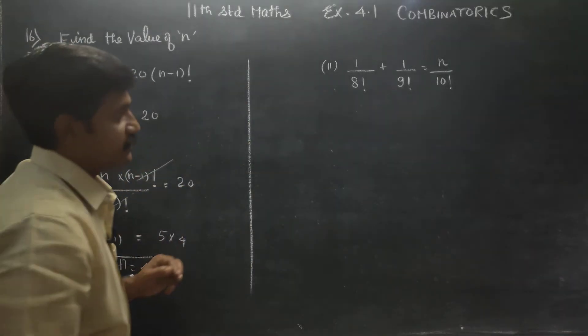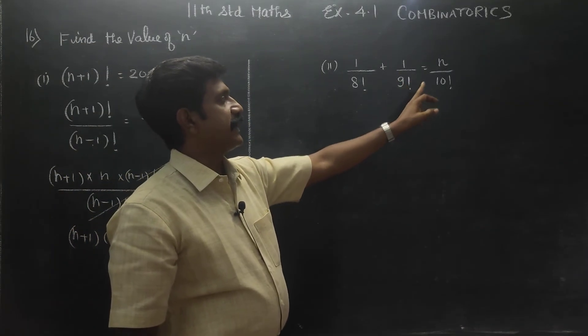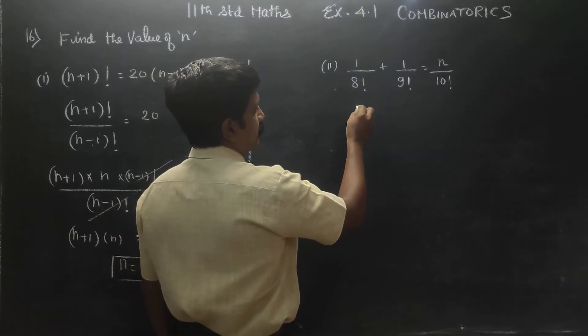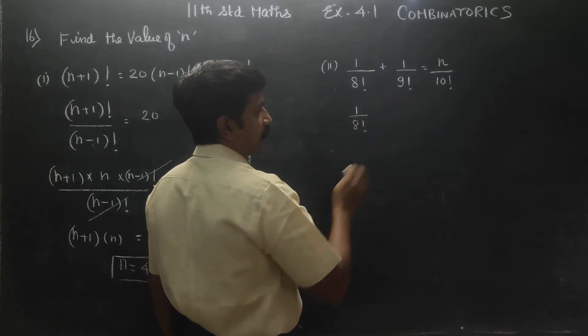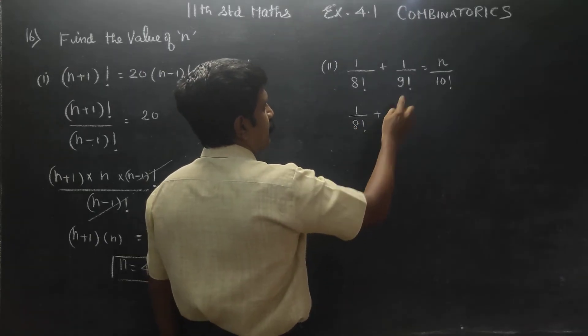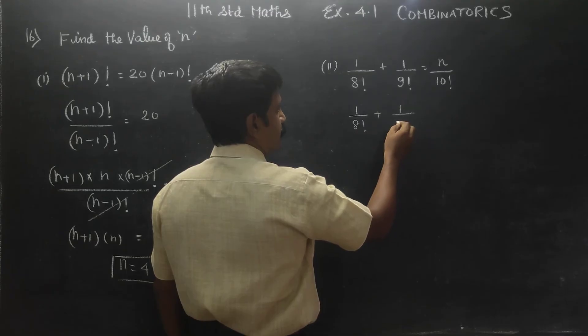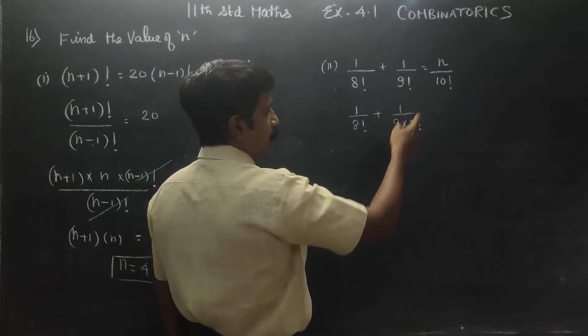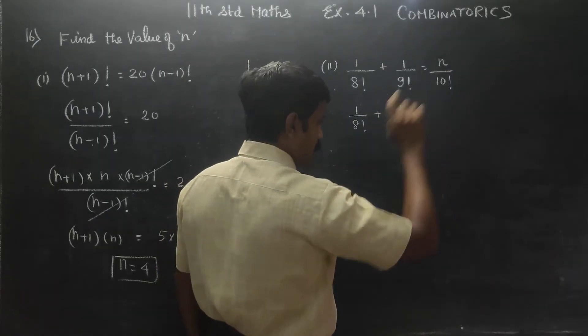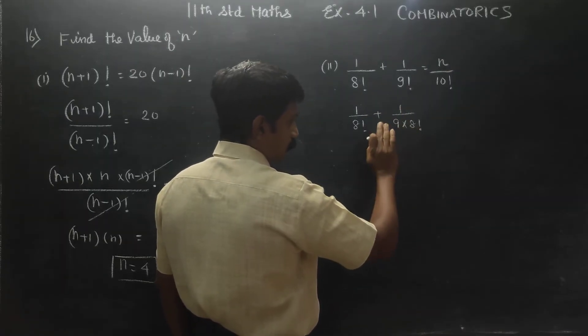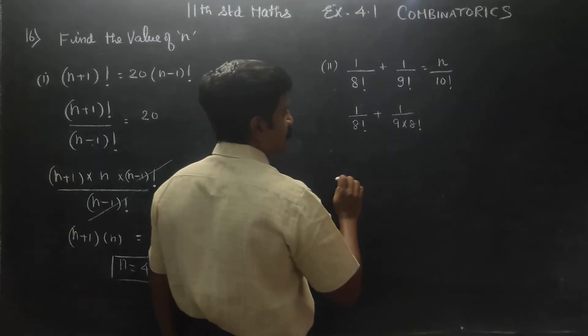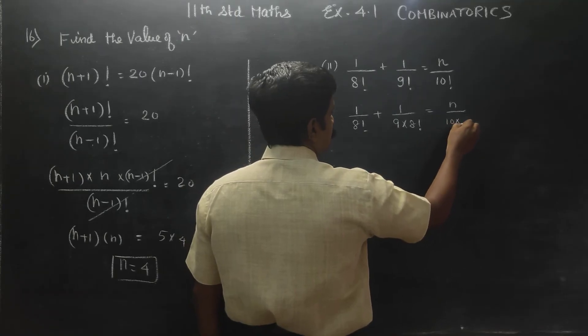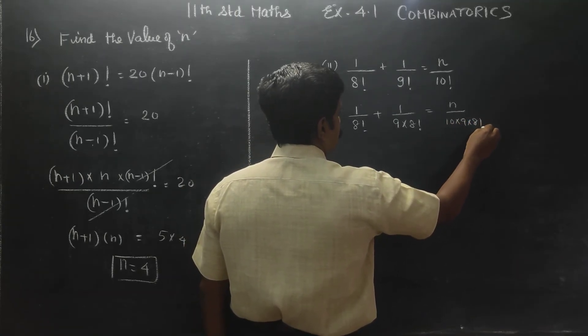1 by 8 factorial plus 1 by 9 factorial is equal to n by 10 factorial. This can be written as 10 into 9 into 8 factorial.